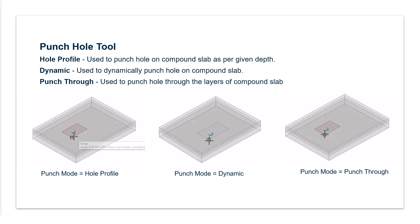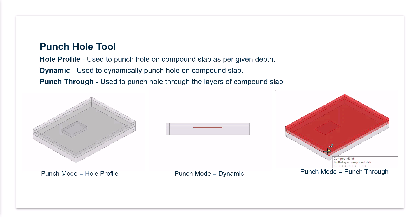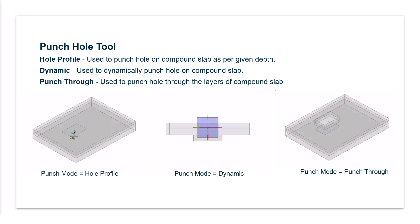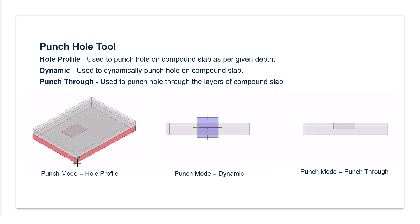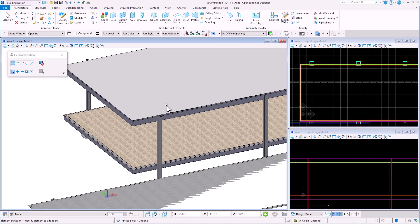The Punch Hole tool is a way of creating an opening in a compound slab. There are different modes for the tool: hole profile with defined depth, dynamic mode where the opening is created dynamically in the model, and punch through to create an opening through the selected layers. Let's see it in our upgraded model.